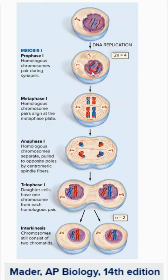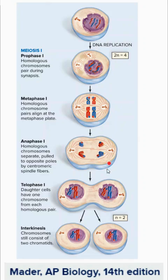In meiosis I, the homologous chromosomes are brought together through a process called synapsis, where tetrads are formed and crossing over can occur — you can actually get part of mom's chromosome swapped onto dad's chromosome. In prophase I, the nuclear membrane dissolves and spindle fibers form. In metaphase I, the homologous chromosomes line up in the middle and are pulled apart.